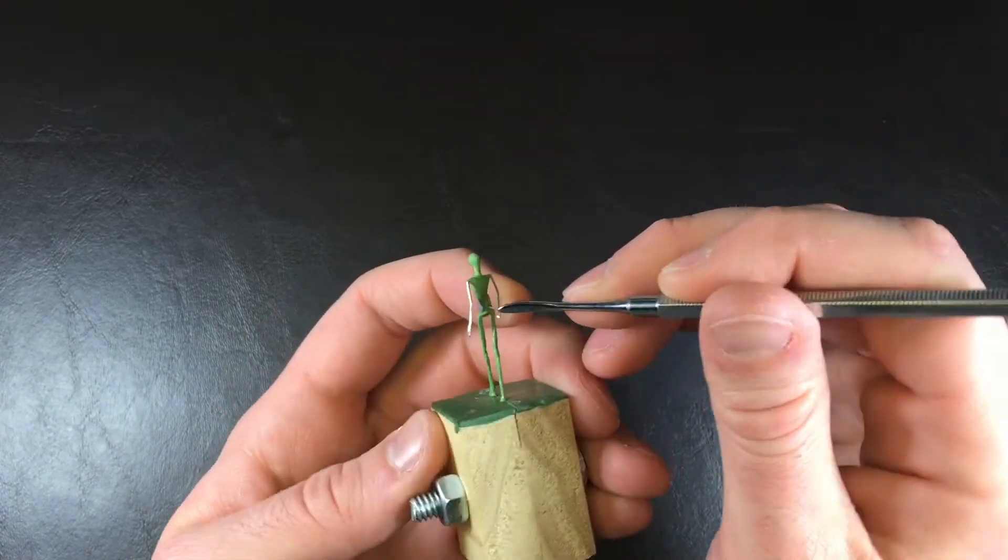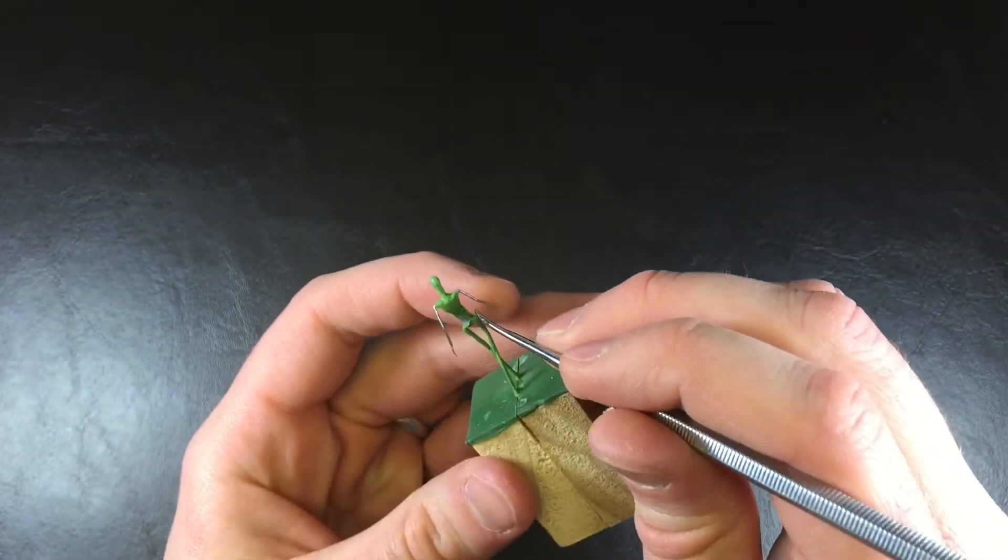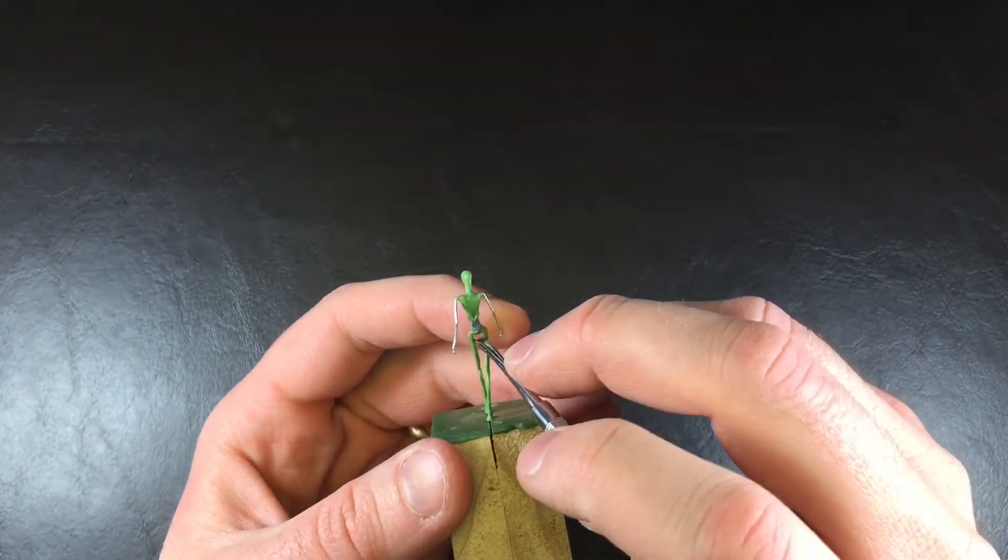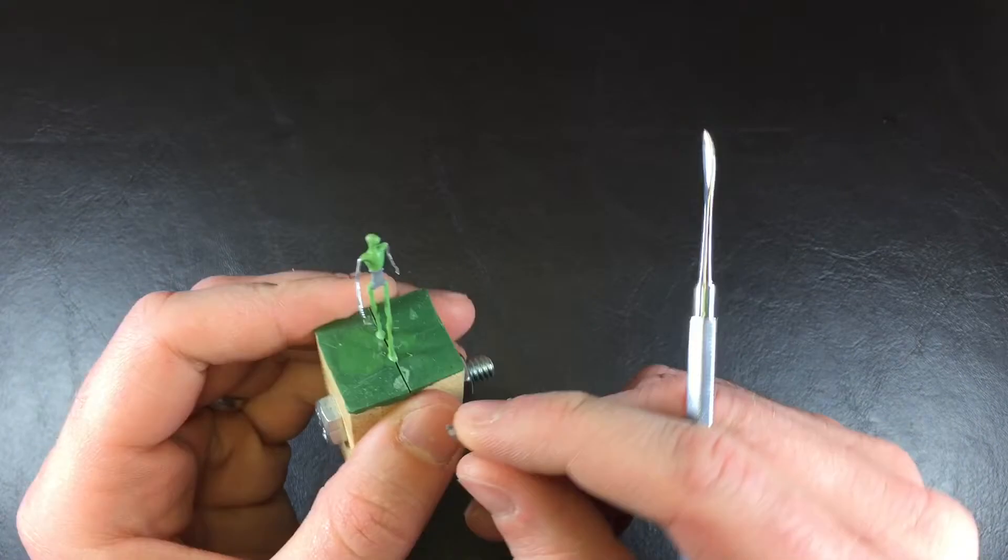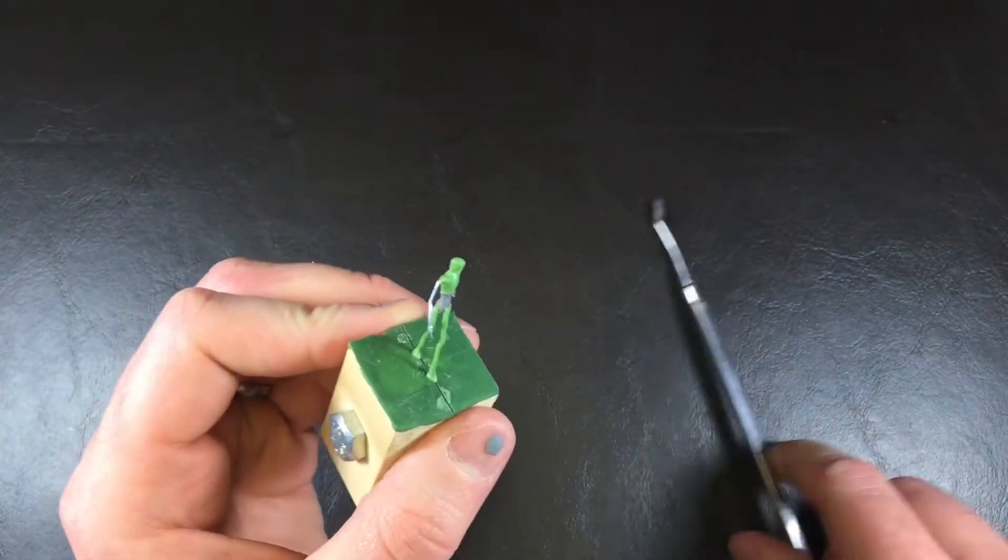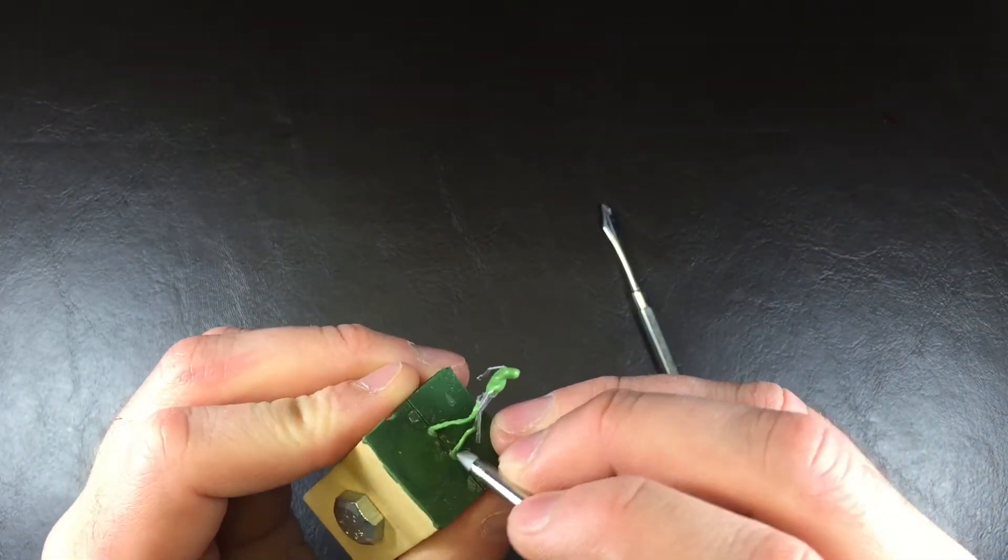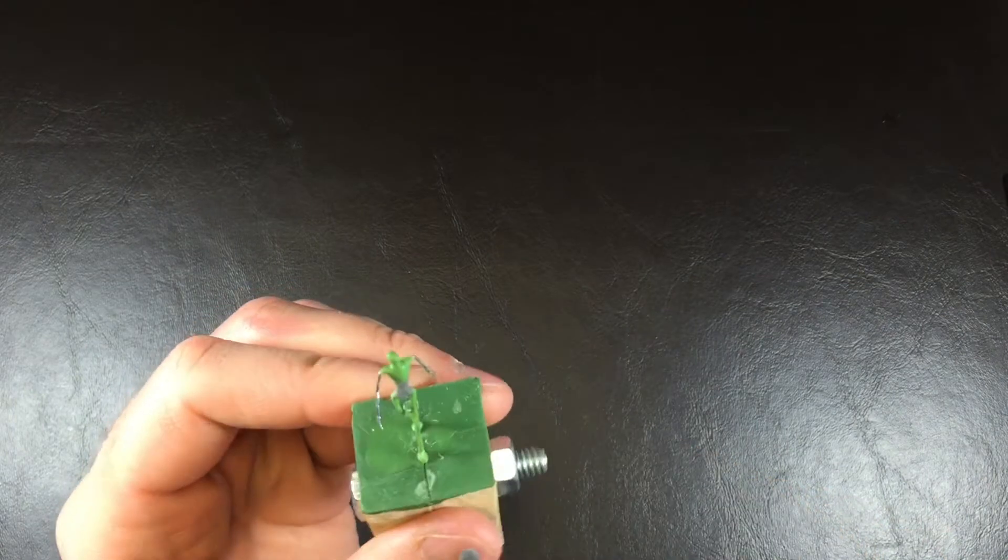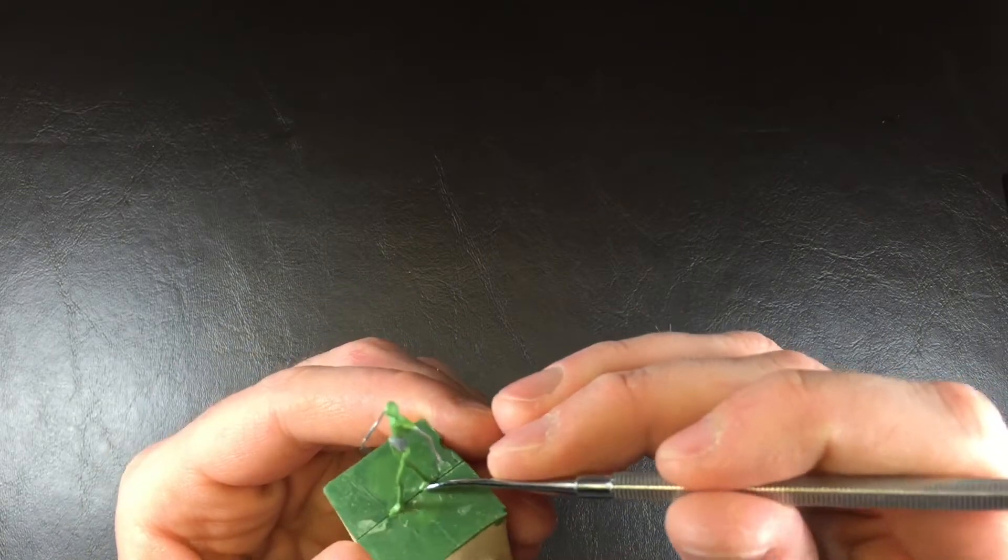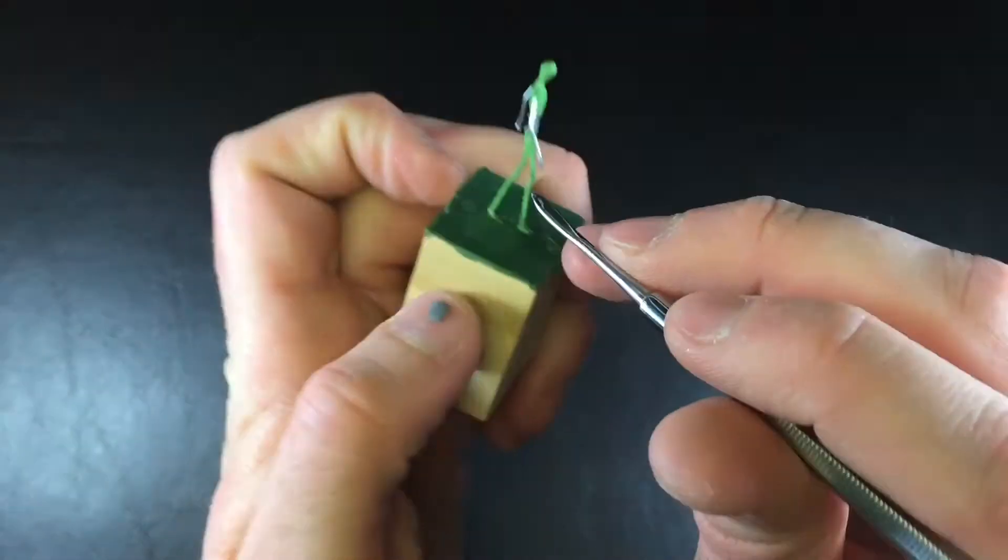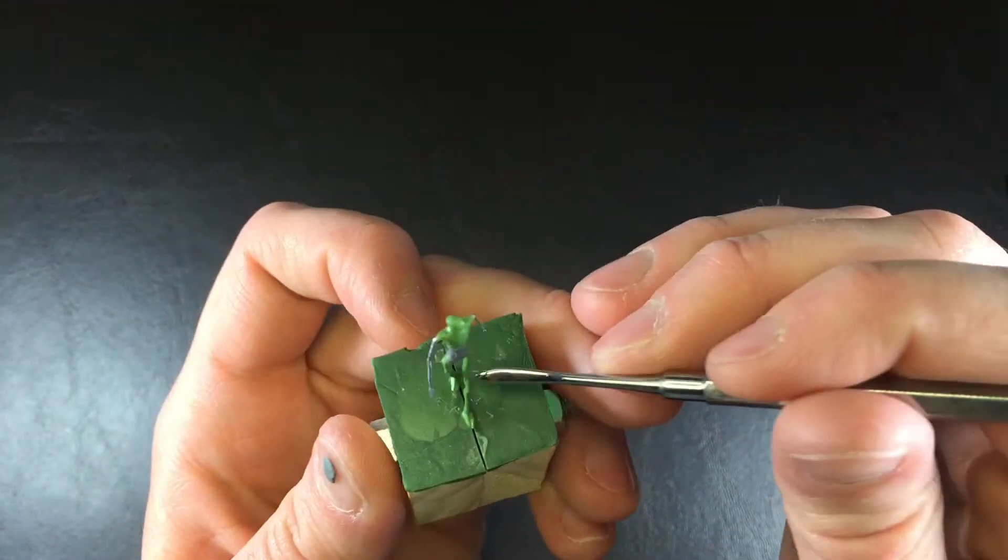It's a polymer clay. A lot of people over here in the US are probably familiar with Super Sculpey. Both of these are clays that are designed to be baked in your oven, so you don't need a special kiln or anything. They're obviously made out of polymers instead of natural clay.